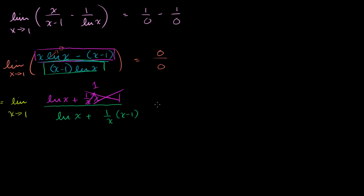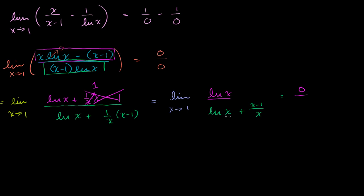After simplification, the 1 over x times x terms cancel with the minus 1, and the expression becomes the limit as x approaches 1 of natural log of x over the natural log of x plus x minus 1 over x. Evaluating at x equals 1: the numerator gives natural log of 1, which is 0, and the denominator gives 0 plus 0 — so we get 0 over 0 again.